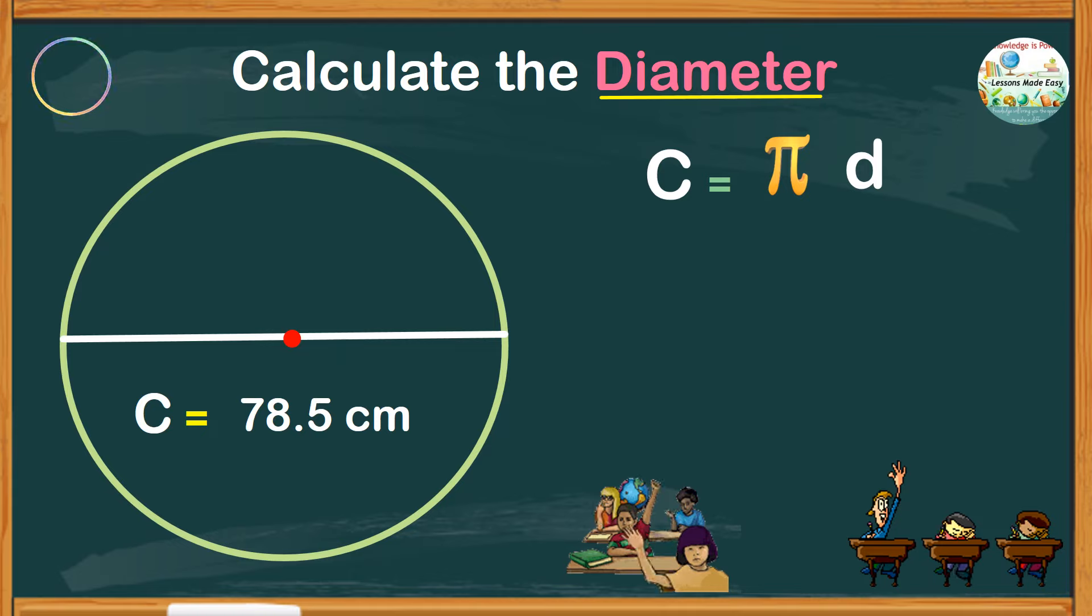All we have to do is substitute the values. So the circumference is 78.5 centimeters equals pi, which is 3.14, and keep d as it is.